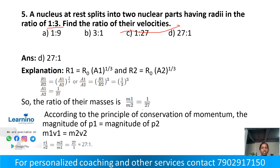The ratio of masses M1:M2 is 1:27. By conservation of momentum, magnitude of P1 equals magnitude of P2, so M1 × V1 equals M2 × V2. Therefore V1 by V2 equals M2 by M1 equals 27 by 1. The answer is Option D: 27 to 1.